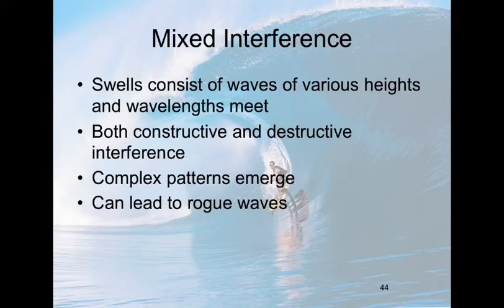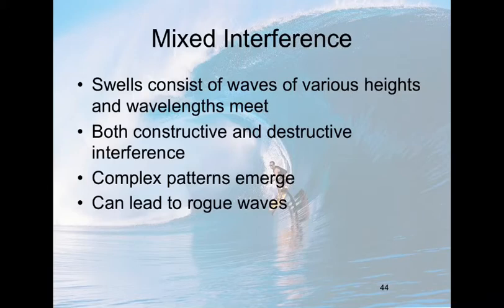Mixed interference is much more common. You find it very often in the open ocean, where you have swells coming from different storms all over the planet. Frequently they don't have the same wavelength and can have various wave heights. Sometimes when they interact, parts are constructive and parts are destructive. You get very complex patterns, and it is believed that they give rise to rogue waves, which we'll talk about in greater detail and see in a cool little video with a Lego pirate.